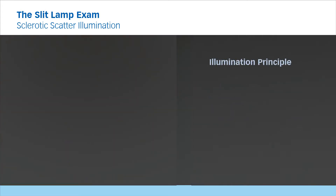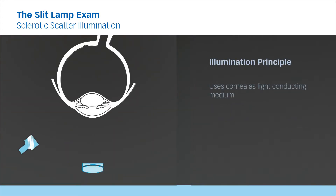Illumination principle. Sclerotic scatter, or more precisely referred to as dark field illumination, is an indirect illumination technique that uses the cornea as a light-conducting medium.